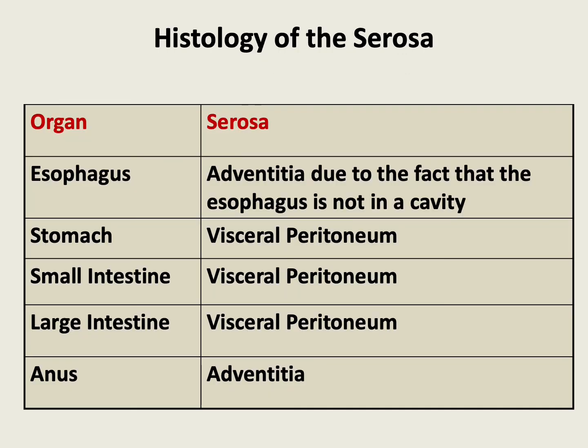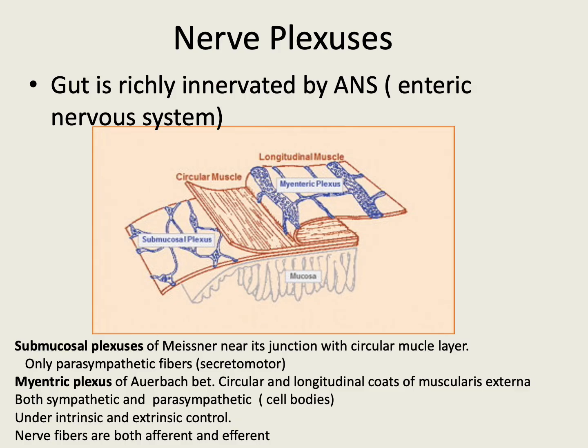Here we can see the adventitia or serous layer in different parts. In the esophagus, we have adventitia, due to the fact that the esophagus is not in the peritoneal cavity. Whereas the stomach, small intestine, and large intestine are covered by the visceral peritoneum. Whereas the anal canal is covered by the adventitia.